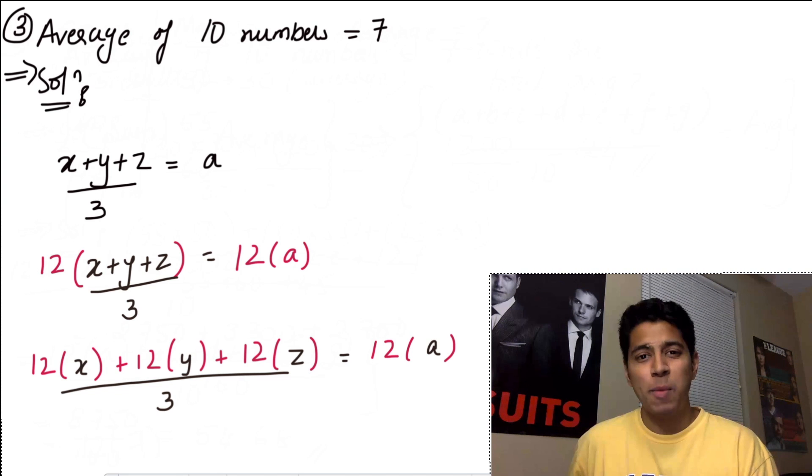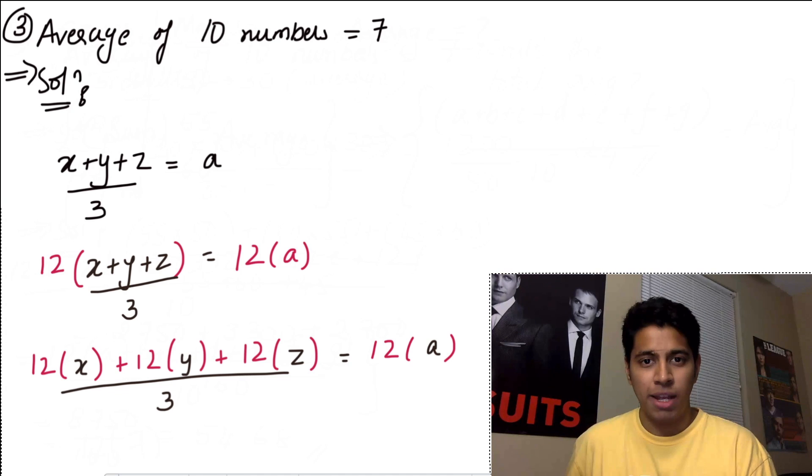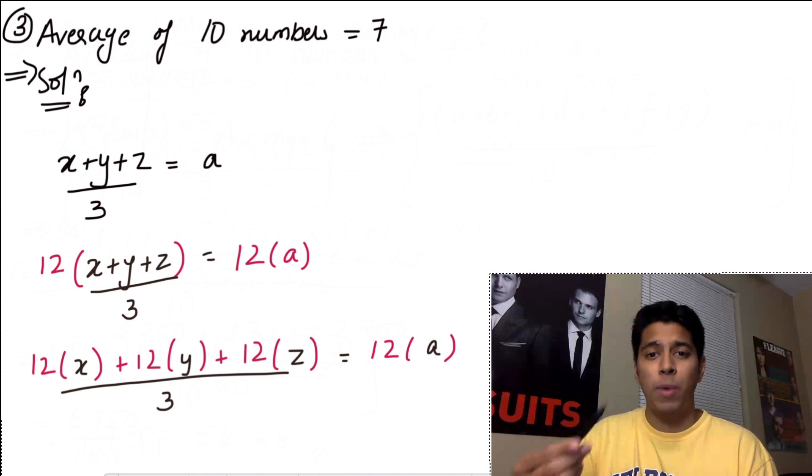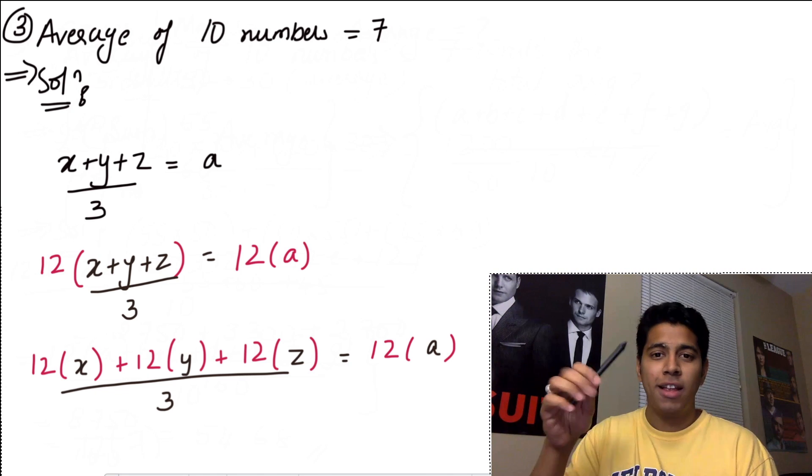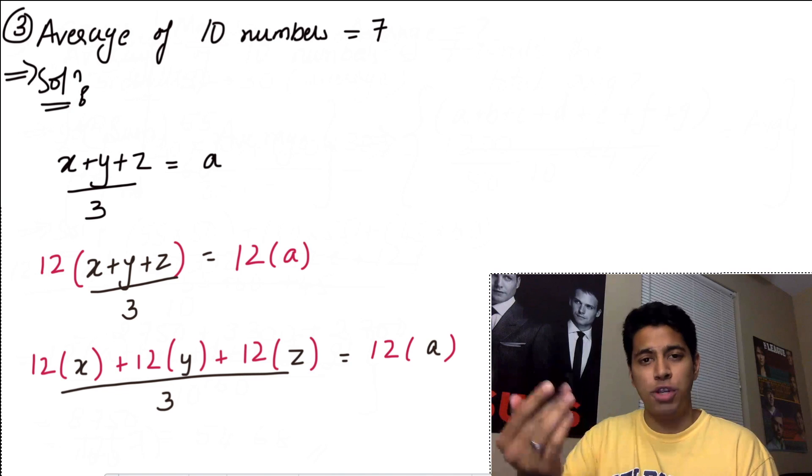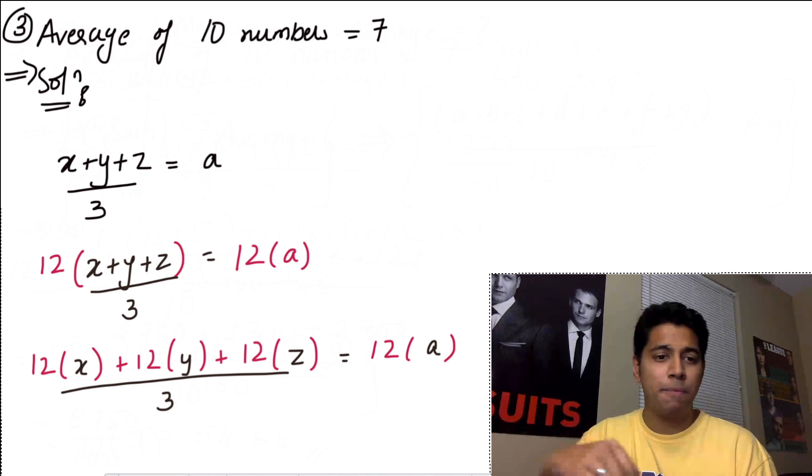Now for the third problem, what they've said is that you have an average of 10 numbers is equal to 7. Now if each of the numbers is multiplied by 12, what is the new average? Now this is a very important concept for you to understand for the future as well. So let's spend some time on it.